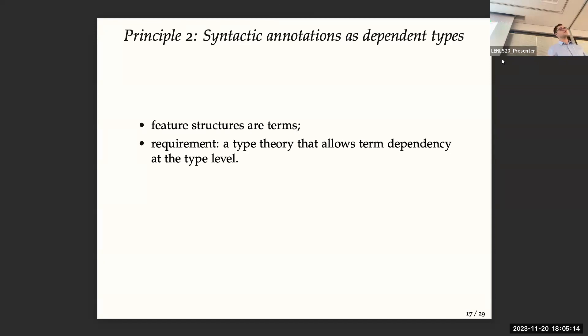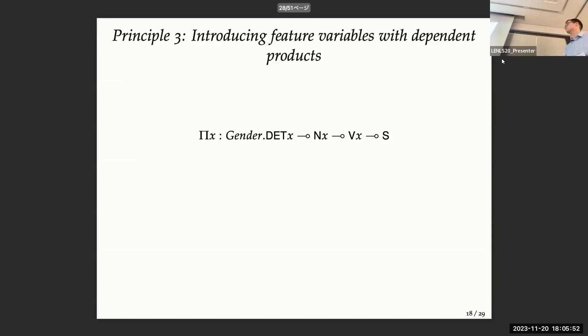So basically, feature structures are terms. And we need a type theory which allows to add term dependency in the types. And this corresponds to dependent type theory, and we have seen yesterday a lot of things about it. So basically, we are trying to attach feature structures to syntactic categories. So we use enumeration as a type family. And this allows you to do syntactic annotation with the structure.